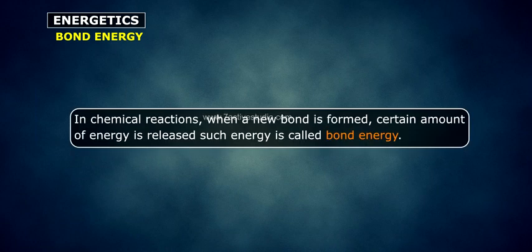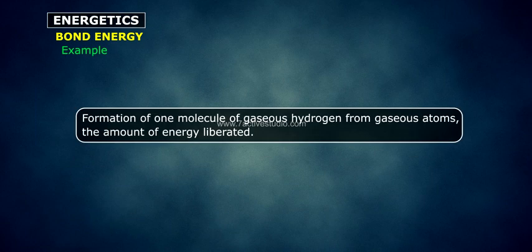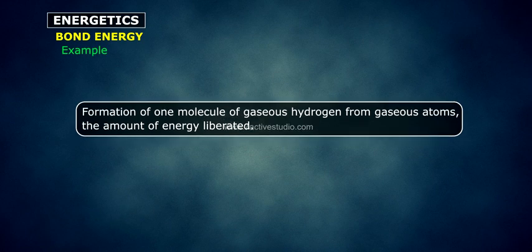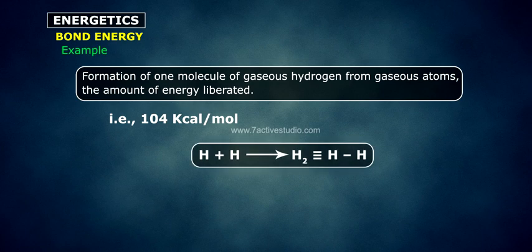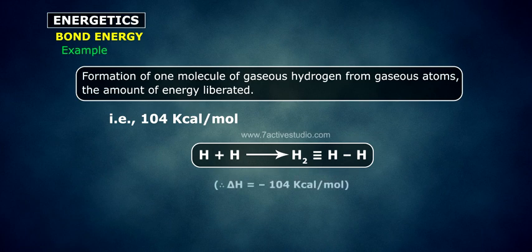Bond energy: In chemical reactions, when a new bond is formed, a certain amount of energy is released. Such energy is called bond energy. For example, the formation of one molecule of gaseous hydrogen from gaseous atoms liberates 104 kcal per mole. That is, H + H → H₂ (H–H), ΔH = −104 kcal/mol.